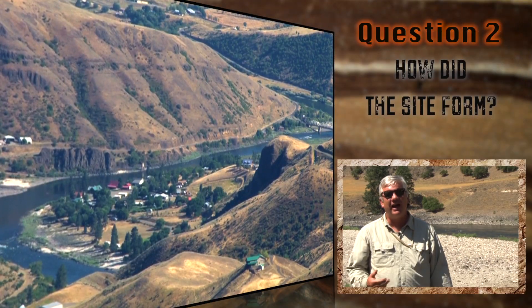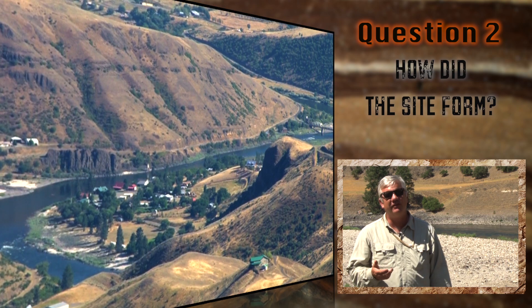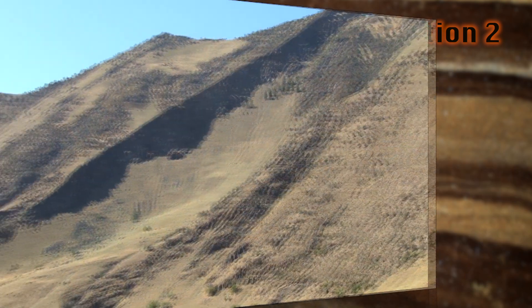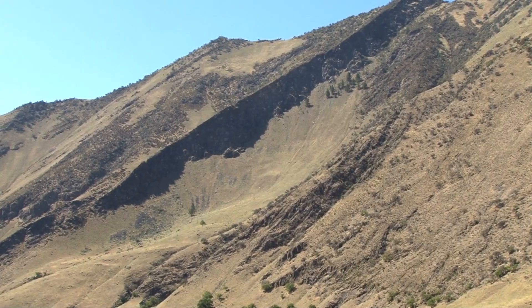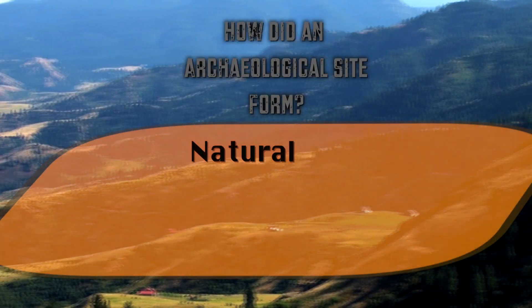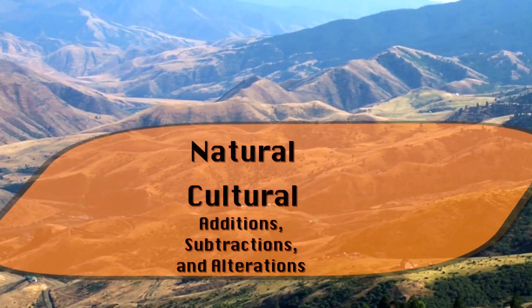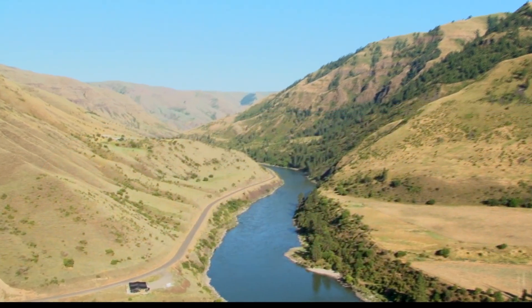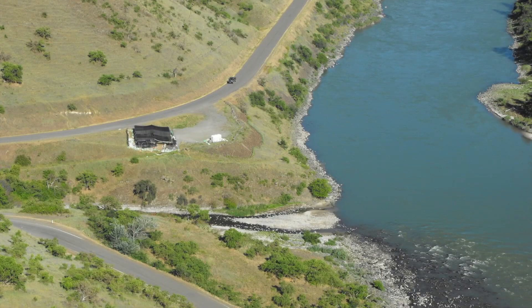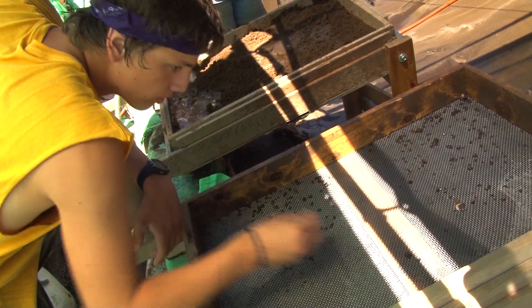The second topic a geoarchaeologist commonly works on as part of an archeological team is answering the question of how did an archeological site form — that is, what is its site formation history? To answer this question, the geoarchaeologist must be able to identify and interpret how natural and cultural processes made additions, subtractions, and alterations to an archeological site. Knowing the site formation history helps archeologists understand why a site's archeological record is structured in a certain way.